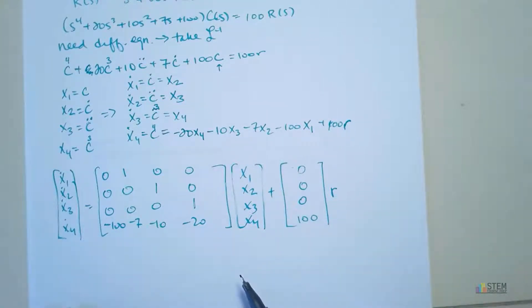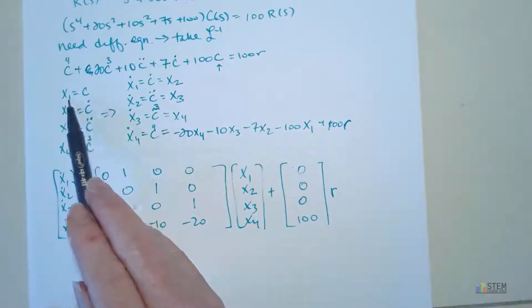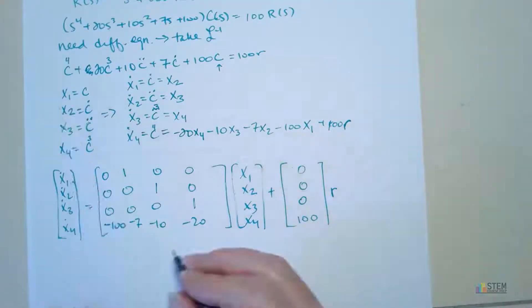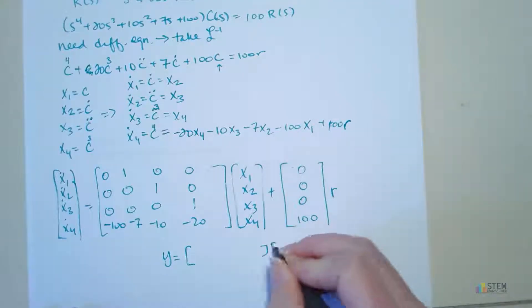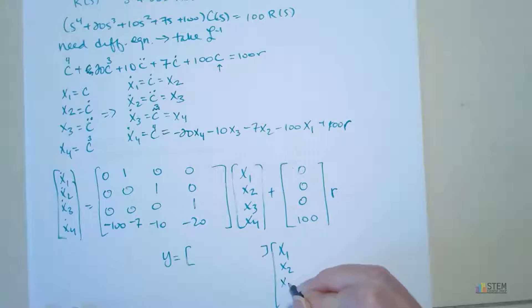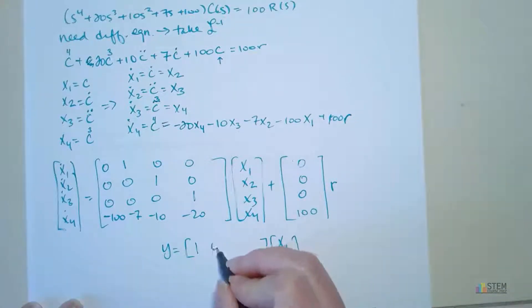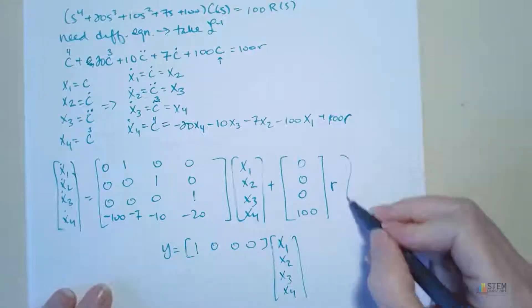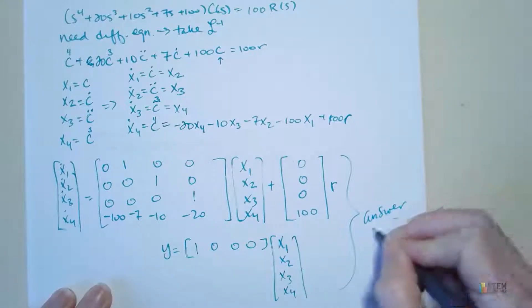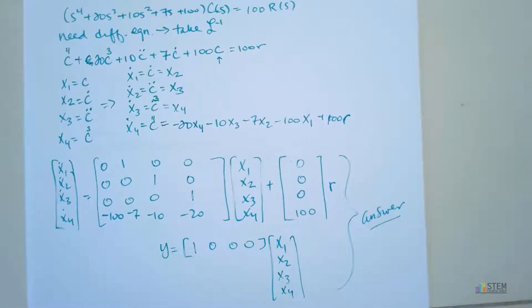Now you need to write out your output equation. We already know the output is C, and the variable that represents C is x1. So that means when we do our equation, we need to pick our coefficients so that we end up with x1. So that means C needs to be 1 with three 0s. Because when you multiply this together, you'll get 1 times x1, and that's what we want. So then this right here, this whole thing, would be the answer.